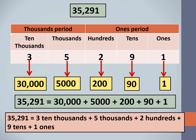Let's take another number, 35,291, and learn to write it in expanded form. We again place the digits in the place value chart. The digit 3 is in the ten-thousands place, so its place value is 30,000. The digit 5 is in the thousands place, so its place value is 5,000. The digit 2 is in the hundreds place, so its place value is 200. The digit 9 is in the tens place, so its place value is 90. The digit 1 is in the ones place, so its place value is 1.